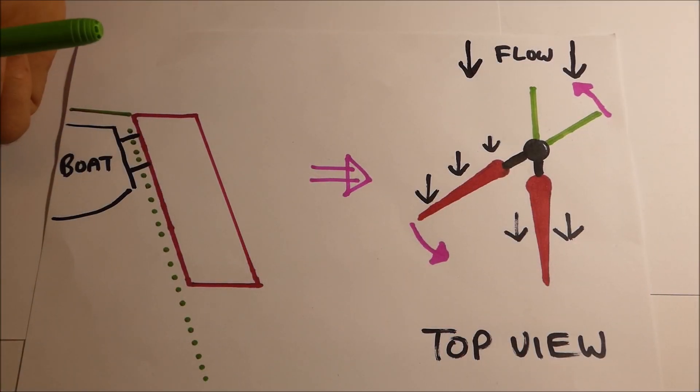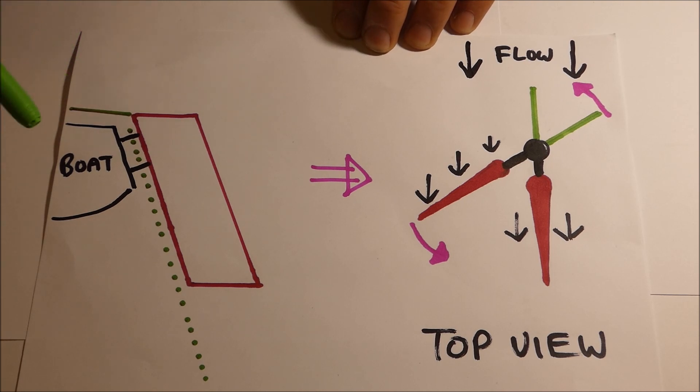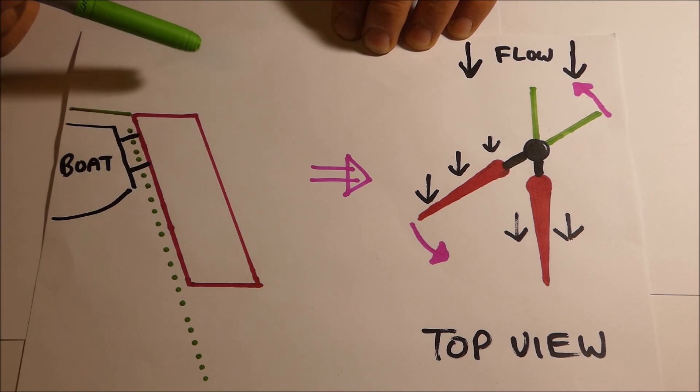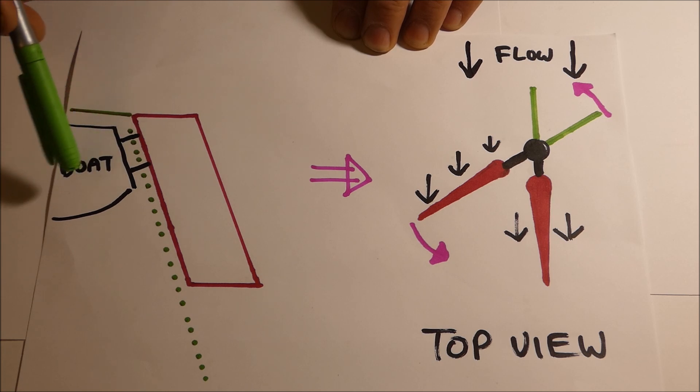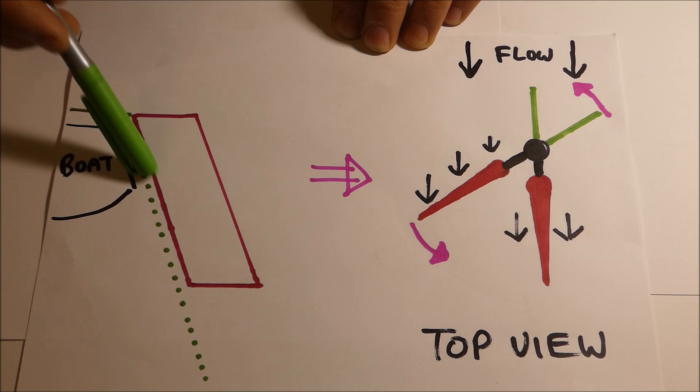Okay, so to understand rudder balance we'll have a look at what the standard configuration of the RL28 is to start off with, and also what the standard configuration most trailer sailors are. So you have the back of the boat, two black lines there represent the pintles, the red represents the rudder blade.